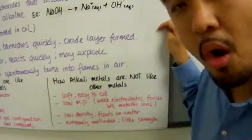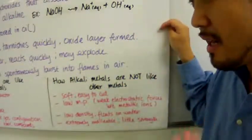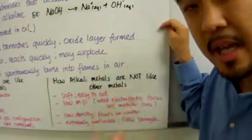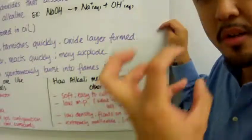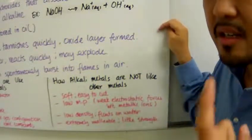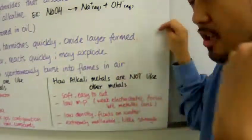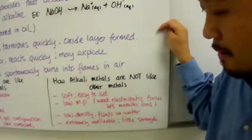Alkali metals have a very low melting point. This is because of the weak electrostatic forces of attraction between the metallic ions in the metallic bond. The weak forces, due to the one delocalized electron, contribute to the low melting point and softness.